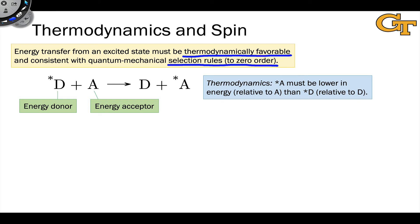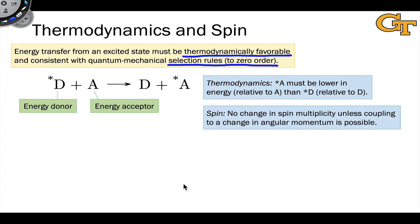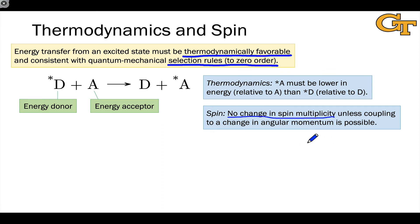I don't want to mislead you into believing that endothermic energy transfer is impossible. That said, endothermic energy transfer in a photochemical context is very often kinetically very slow and very difficult to take advantage of. Regarding spin selection rules: no change in spin multiplicity is allowed unless coupling to some other change in angular momentum — such as spin-orbit coupling or a magnetic field — is possible. Generally, it's much more common to allow intersystem crossing to take care of changes in spin, and to do singlet-singlet or triplet-triplet energy transfer.